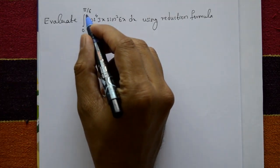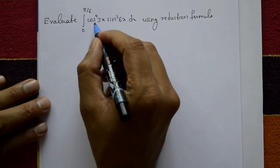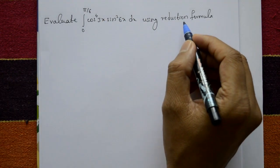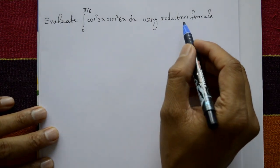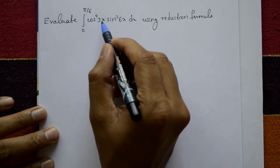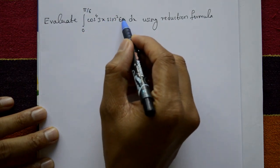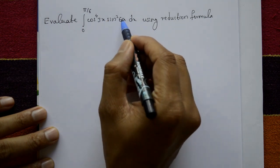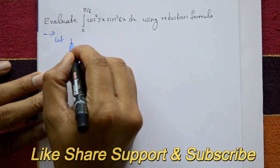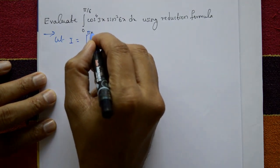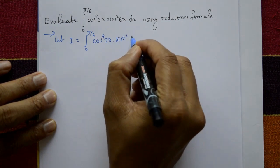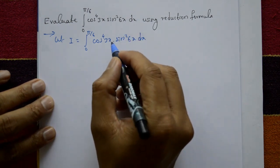Evaluate the integration of 0 to π/6 of cos⁴(3x) · sin²(6x) dx using the reduction formula. To apply the reduction formula, we require limits 0 to π/2, so this part requires the same substitution. Let i be the given integral: i = ∫₀^(π/6) cos⁴(3x) · sin²(6x) dx.